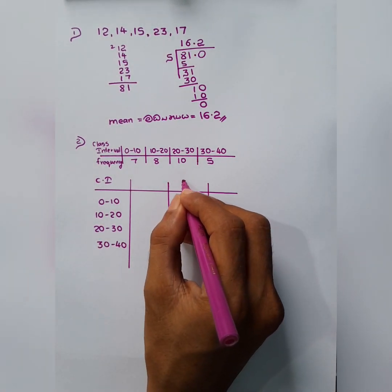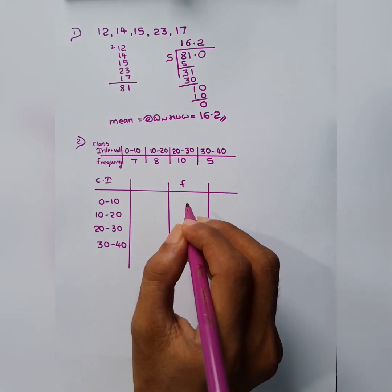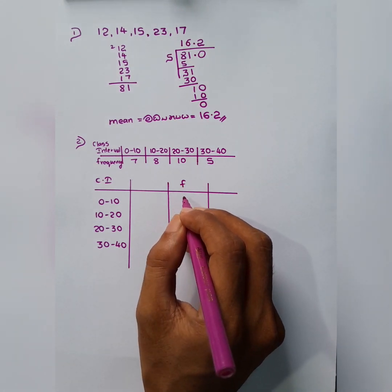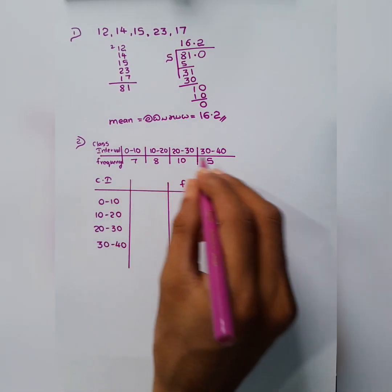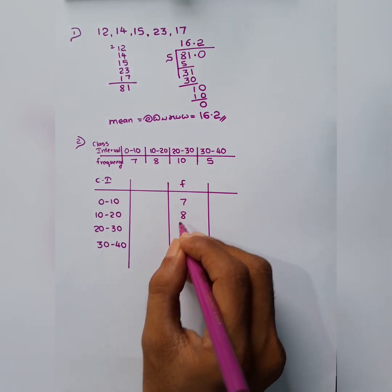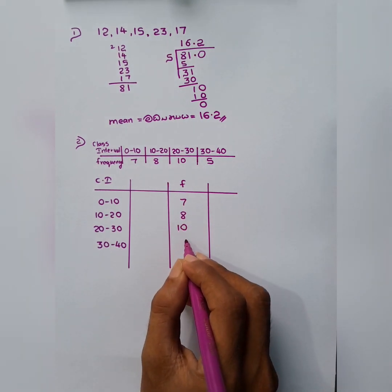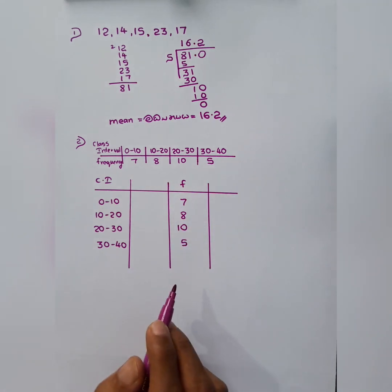And f, frequency. We have to mark the frequencies what they have given. 7, 8, 10, 5.